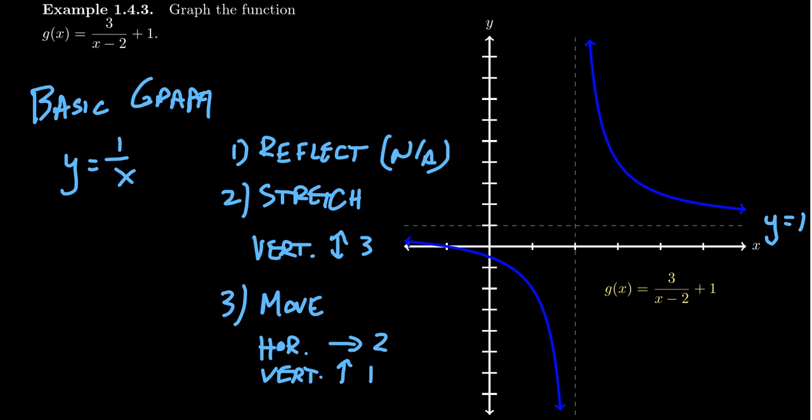And then also, if we do the same thing to the vertical asymptote, which is the y-axis. The y-axis, when you stretch everything by a factor of 3, that doesn't change the vertical line. When you shift everything over by 2, that does move it over here. So we get the vertical asymptote x equals 2. And then shifting everything up by 1 doesn't change the horizontal line as well.